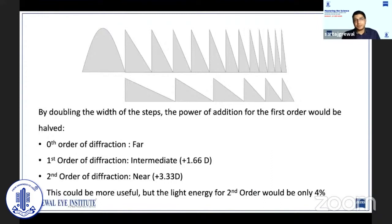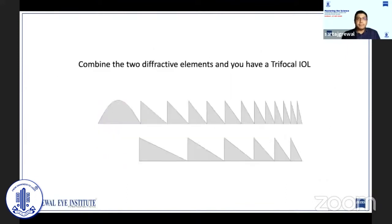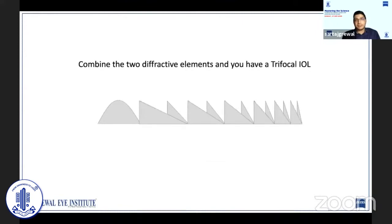However, the light energy would be only 4%, making the images too dim to be useful. So, if we create two different diffractive optics where the respective first orders provide near and intermediate vision separately, and adjust the height of the steps so that light energy is optimally distributed, then combine the two diffractive elements, you would actually have a trifocal IOL that corrects for near, intermediate, and distance, with light energy distribution that makes the vision comfortable at all these distances.